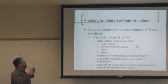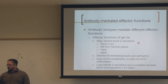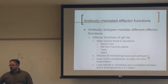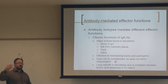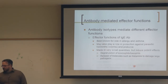The major functions to know for each isotype: IgA is the major isotype found in secretions — mucus, gut, milk, mammary glands, tears, and saliva. It is effective at neutralizing toxins and pathogens, blocking entry before they get in. Importantly, IgA does not fix complement, so it does not drive inflammation — which is good since we don't want constant inflammation when we breathe. IgA also has a long half-life in secretions due to protease-resistant amino acid sequences.